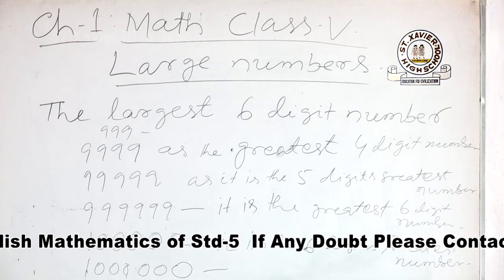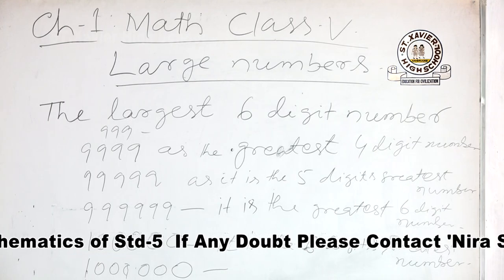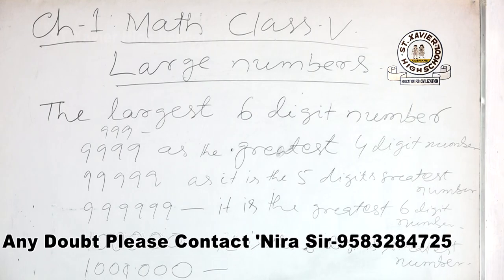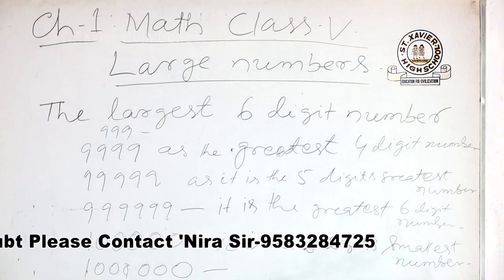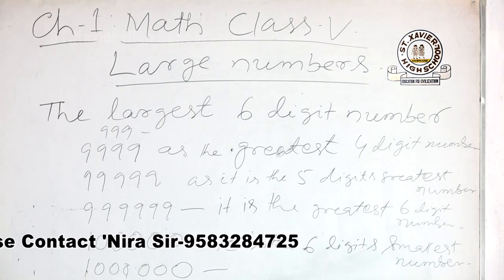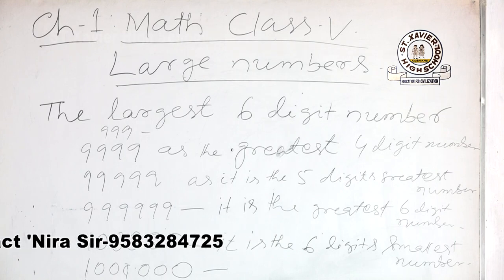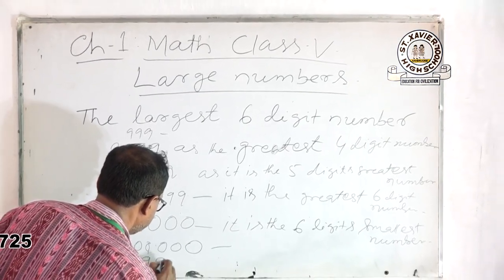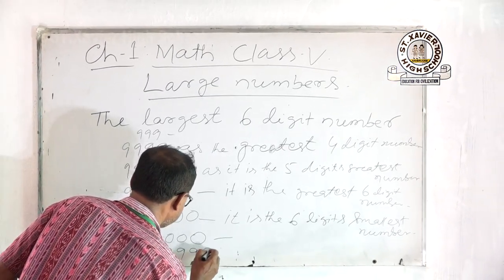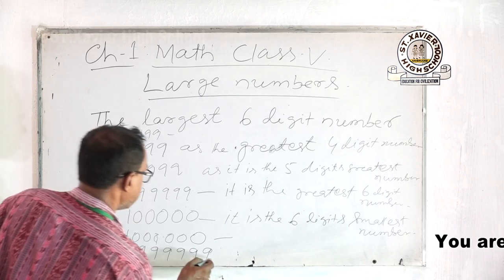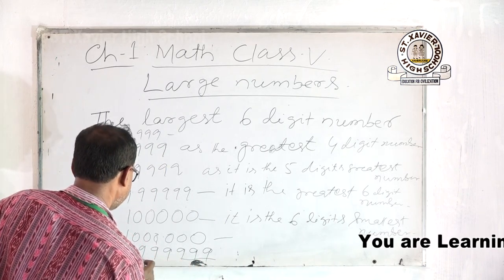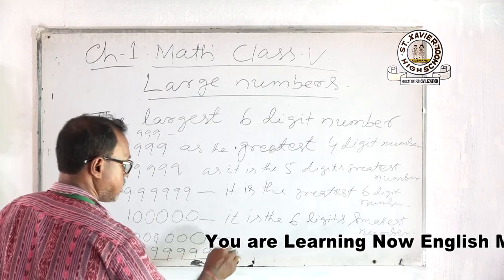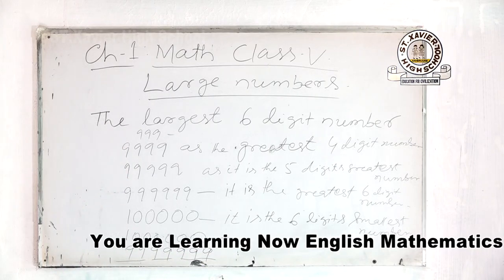One more than 9 lakh 99,999 is 10 lakh — that is a 7-digit number. The largest 7-digit number is 99,99,999 — that means you write seven 9s. That is the 7-digit greatest number.